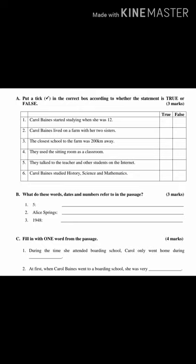Part B: what do these words, dates and numbers refer to in the passage? First: five — the number five in the passage stands for what? Second: Alice Springs — this term refers to what? Part C: fill in with one word from the passage — just one word. First: during the time she attended boarding school, Carol only went home during blank. You will get this answer when you listen to the text.